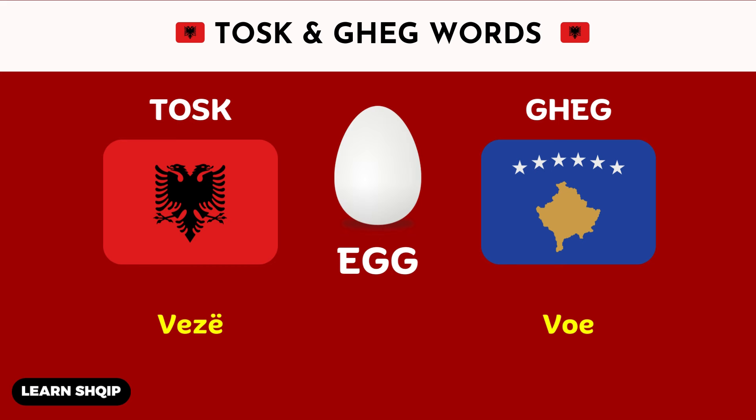Then we have the word egg. For egg, in the Tosk dialect, you are going to say Vez. And then in Geg, it is also Vez.